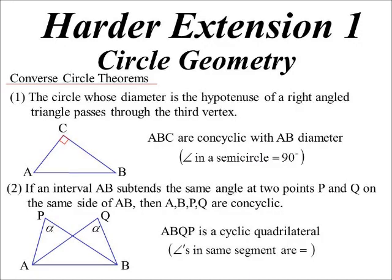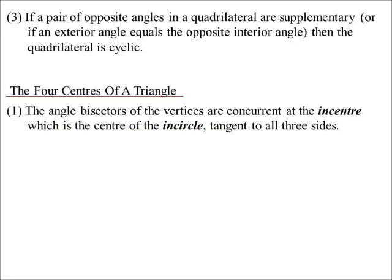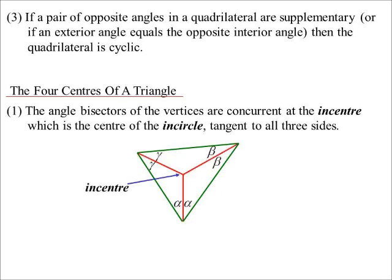But basically, any of our theorems we could use in reverse. Four centers of a triangle may be useful, might not be useful, you might never use them, but here they are. The first one is the in-circle. Now it's called the in-circle because it allows you to inscribe a circle inside the triangle. So if you wanted to find the center, you get the three perpendicular bisectors, join them up.